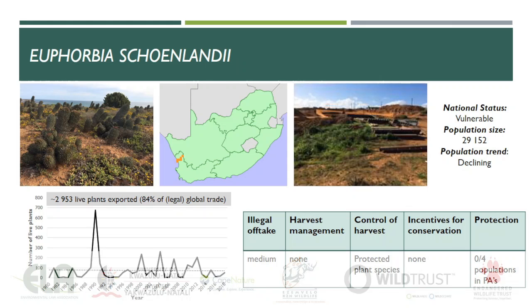There is limited evidence of illegal collection for the species and several nurseries are known to be able to produce artificially propagated specimens in large enough quantities to meet current demand. Illegal offtake is deemed to be medium at present. There is no management of any harvest that would occur for the species. It is protected in the Western Cape and therefore wild collection is subject to certain regulations. There are no incentives for conservation derived from the utilization of the species, and none of the known populations occur in any protected areas.